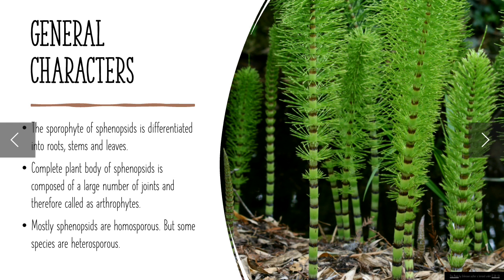General characters of Phenopsida: the sporophytic body of Phenopsida is differentiated into root, stem, and leaves. Mostly Phenopsida have homosporous structure and some species have heterosporous structure.